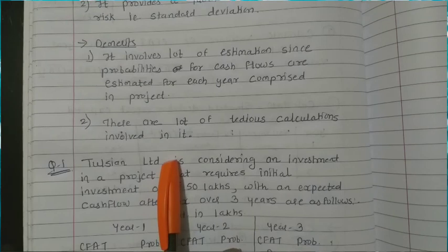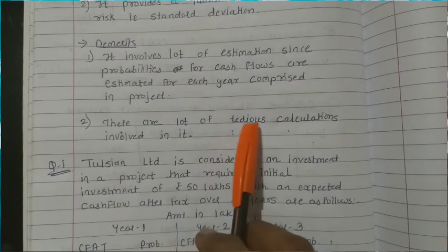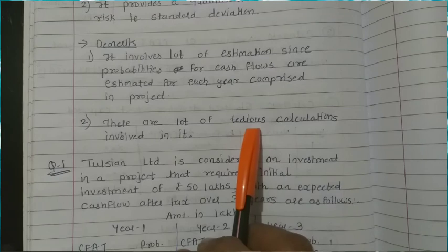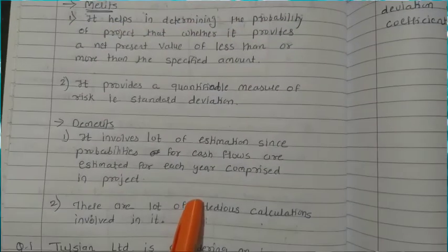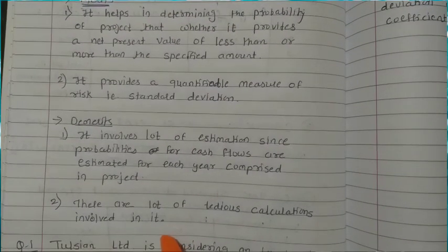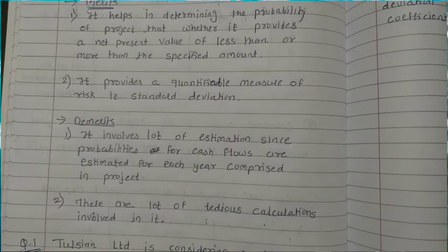Because of this estimation, if any mistake occurs in the steps, your entire calculation will go wrong — so this is a difficult and tedious method. Here we complete the theory of the Probability Distribution approach. In the next video, we will calculate sums. Bye, take care.